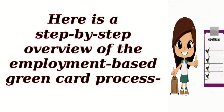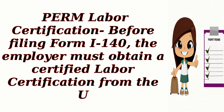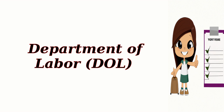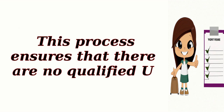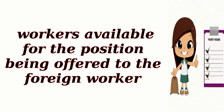Here is a step-by-step overview of the employment-based green card process. Step one: PERM labor certification. Before filing Form I-140, the employer must obtain a certified labor certification from the U.S. Department of Labor (DOL). This process ensures that there are no qualified U.S. workers available for the position being offered to the foreign worker.